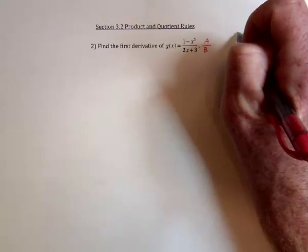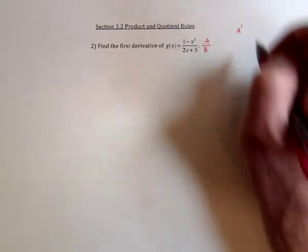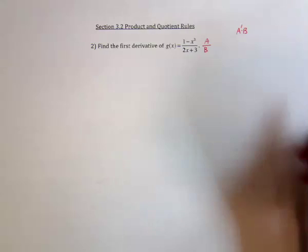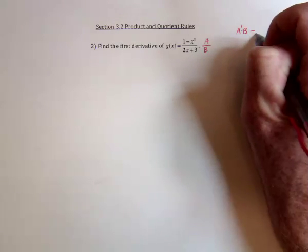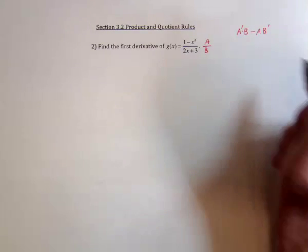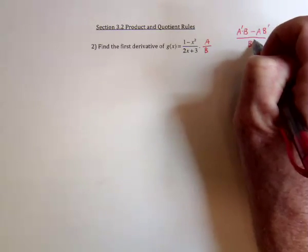then the derivative is going to be take the derivative of the top one first and leave the bottom one alone, multiply those, subtract when you leave the top one alone and take the derivative of the bottom one, and then it's divided by the bottom one being squared.